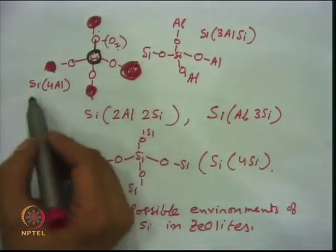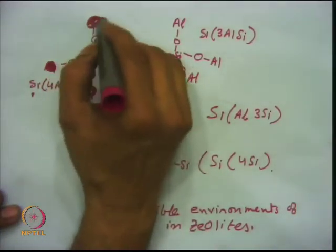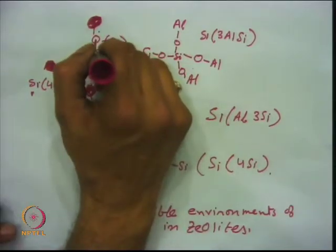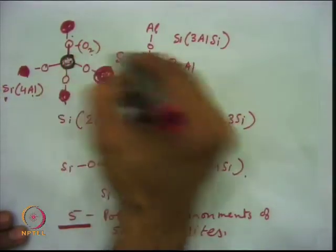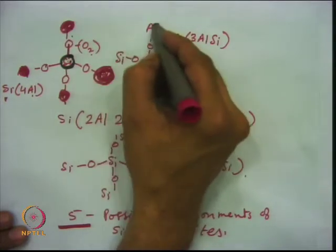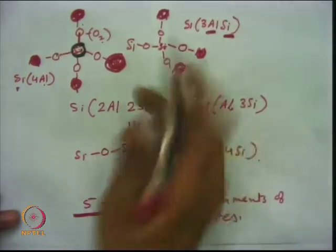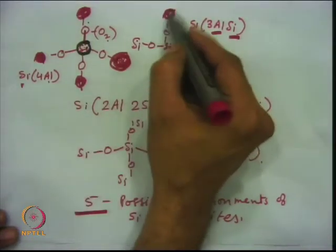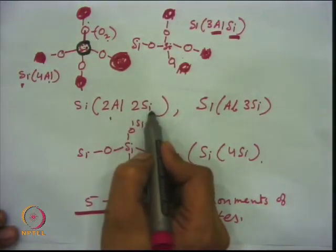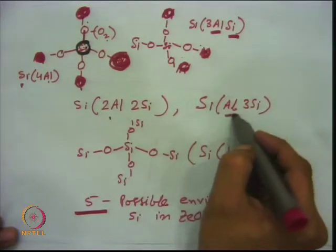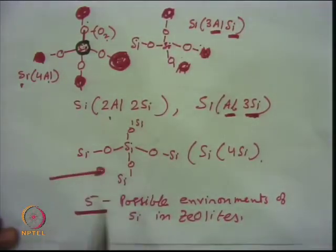Si(4Al) means one tetrahedron with 4 aluminum atoms and silicon at the center. The second combination has one aluminum replaced by silicon — 3 aluminum, 1 Si. Another combination: 2 aluminum, 2 silica. Then 1 aluminum, 3 silica. Finally, if all are replaced you have all silicon — no aluminum. These are the five possible environments available in the zeolite framework.